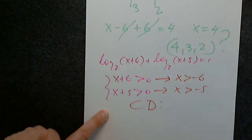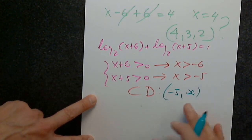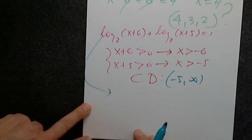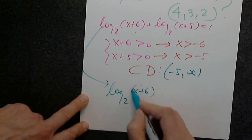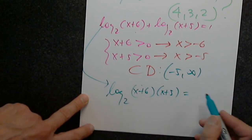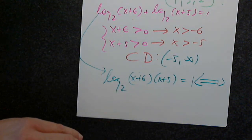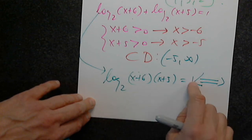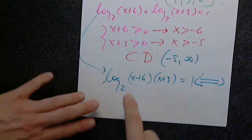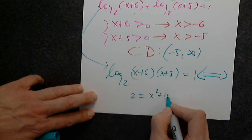The common domain is x greater than negative 5, i.e., negative 5 to infinity. Condensing: log base 2 of the product equals 1. Converting counterclockwise starting from the base: 2 raised to the power 1 equals x plus 6 times x plus 5. So 2 equals x squared plus 11x plus 30.